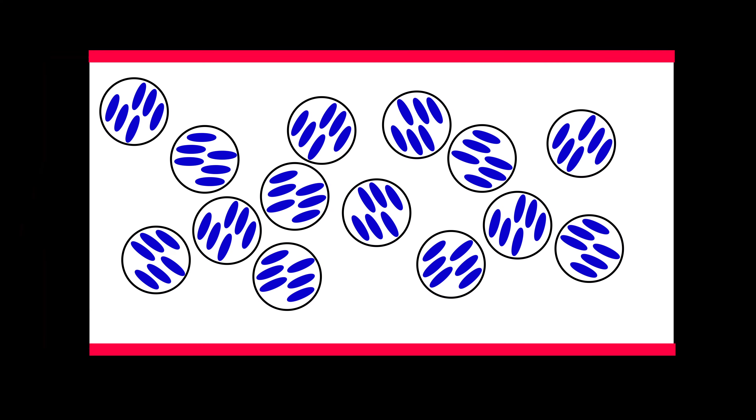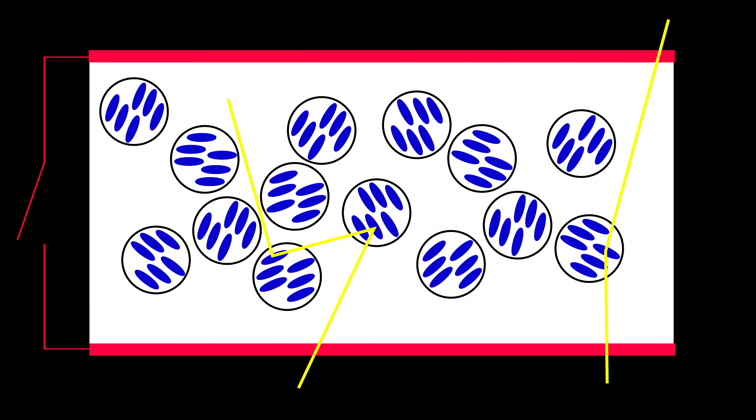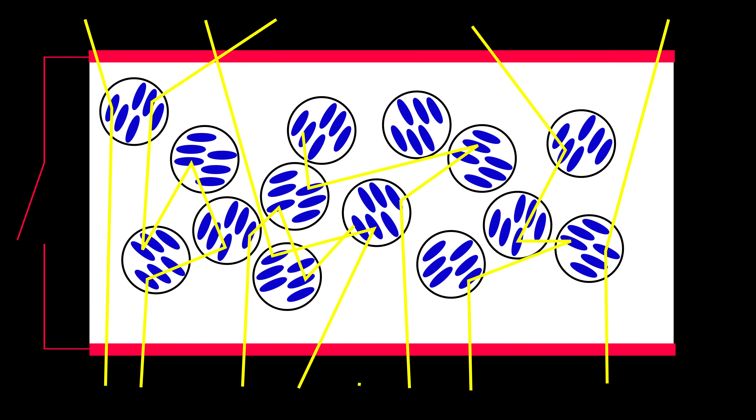The same thing is happening with the liquid crystals. When the liquid crystal is in a random orientation, its index of refraction does not match the polymer, and this causes it to bend light. And since all the molecules have different random orientations, this causes the light to be bent and scattered in all different directions, making it opaque.